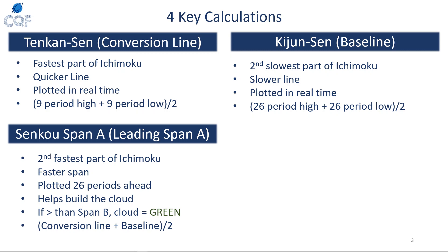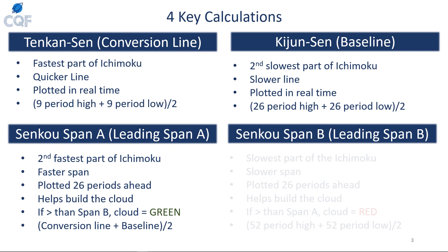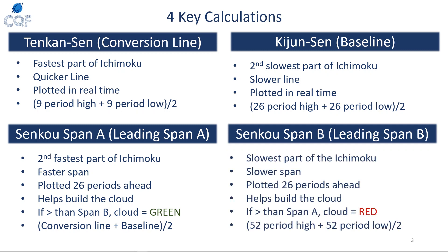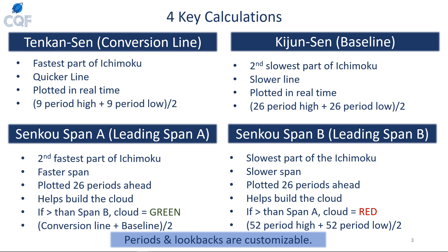Span B is the slowest of the four calculations. It is also plotted 26 periods ahead, and if span B is greater than span A, the cloud is red. Span B is the average of the 52-period high and the 52-period low. As with most indicators, all of this is fully customizable — you can use days, hours, or minutes and change the periods to whatever you'd like.